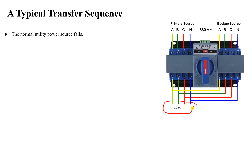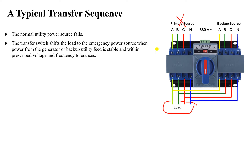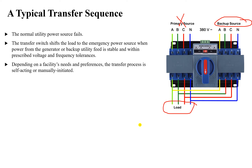Here is the operating sequence of the transfer switch. If the normal utility power source fails — if there is a problem with the primary source — the transfer switch will stop taking power from the primary source and start providing power from the backup source. The transfer switch shifts the load to the emergency power source when the backup generator or utility feed is stable and within the prescribed voltage and frequency tolerance.